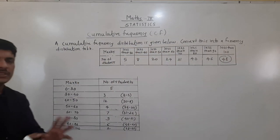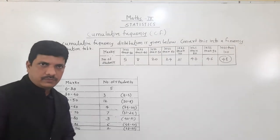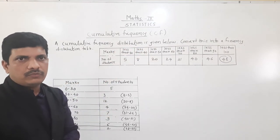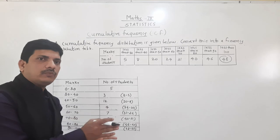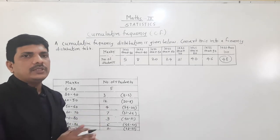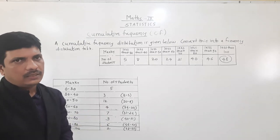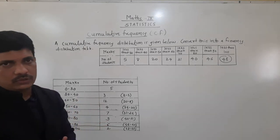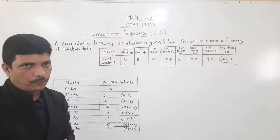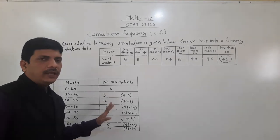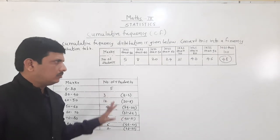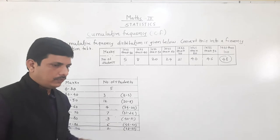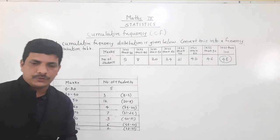So this is the vice versa process: cumulative frequency to frequency distribution, and frequency to cumulative frequency. In cumulative frequency there are two types — less than and more than. This is the basic information and it must be clear. See carefully, solve this in your model book as well. Thank you very much.